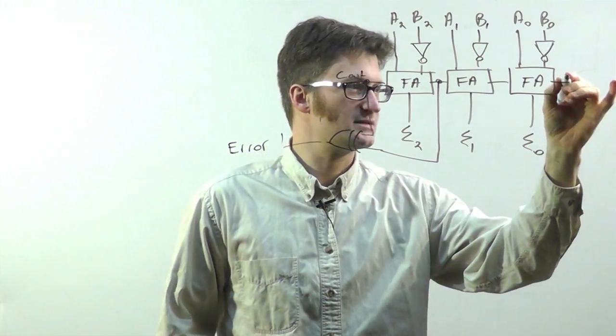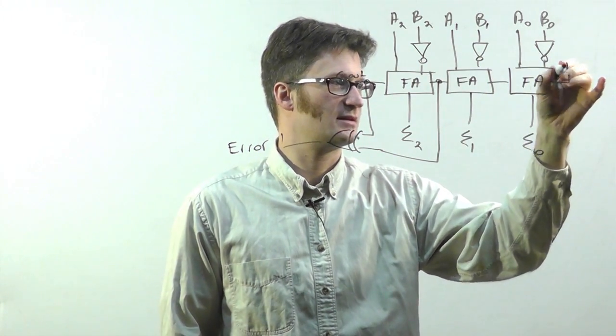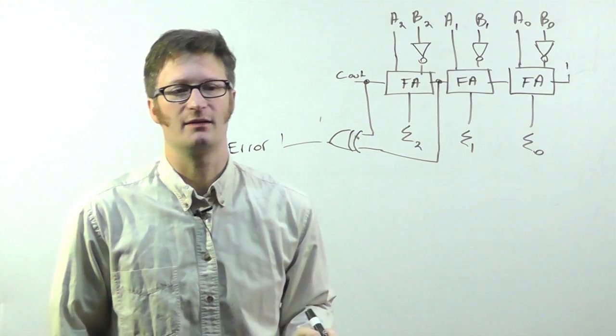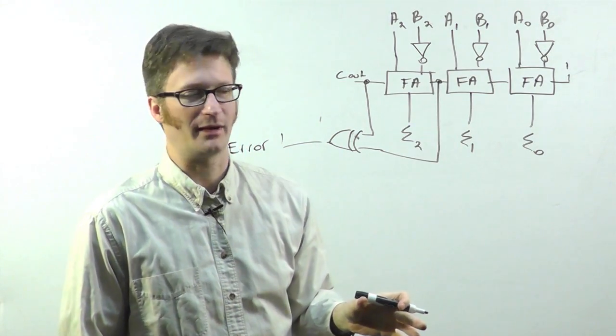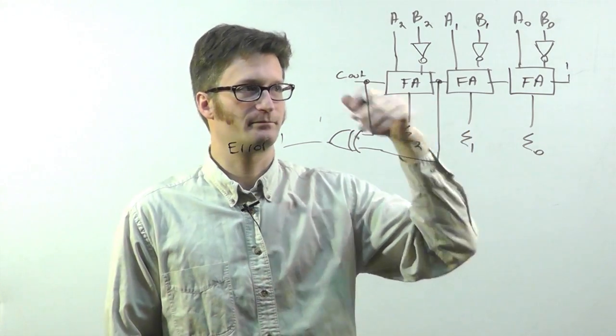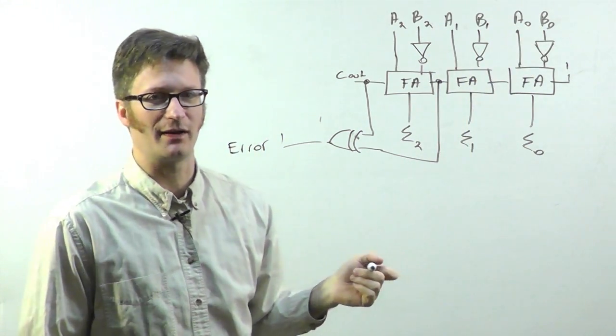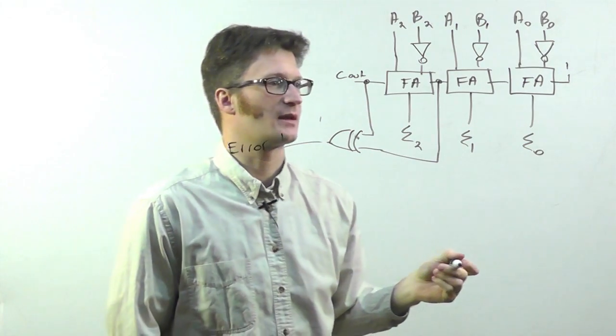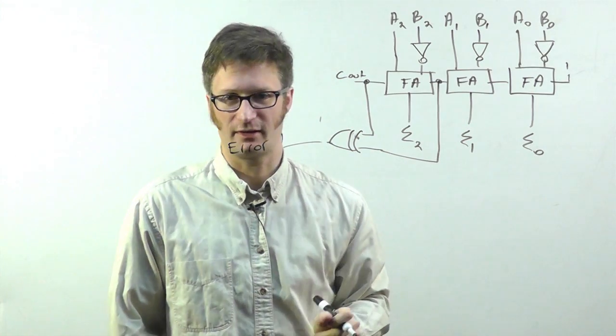Instead, we can just add one. If this is hardwired, then we can just always have the carry in be one. And then it will be a twos complement. B will be a twos complement value. And this will give us just a twos complement answer out of the output.